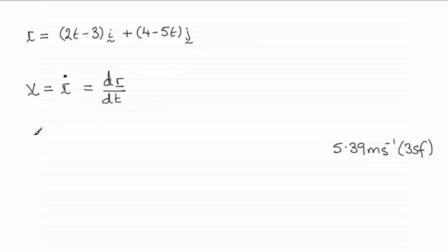So whatever you do, you've basically got to differentiate this with respect to t. And for the i component, if you differentiate 2t with respect to t, you end up with 2 in the i direction.